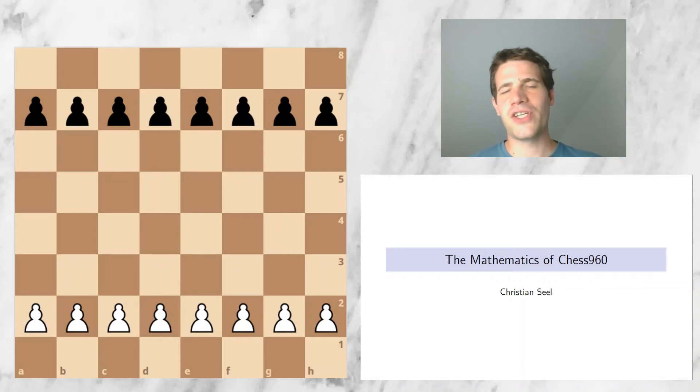Welcome. Today I will talk about the chess variant Fisher Random Chess, also called Chess 960, and I will explain the name Chess 960.